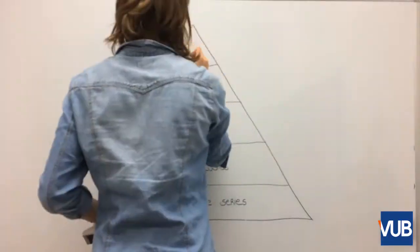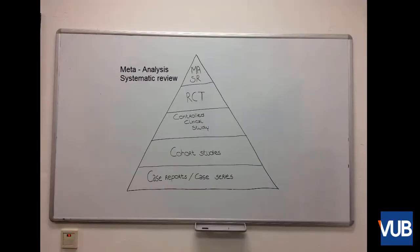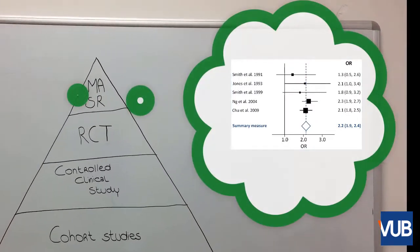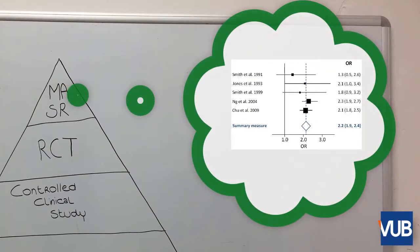A systematic review is a collection of all studies on a certain topic which meets certain demands, such as inclusion criteria and quality. A forest plot is a part of a meta-analysis and is a statistical procedure used in this study design. This data analysis summarizes the evidence of different studies about one specific topic.